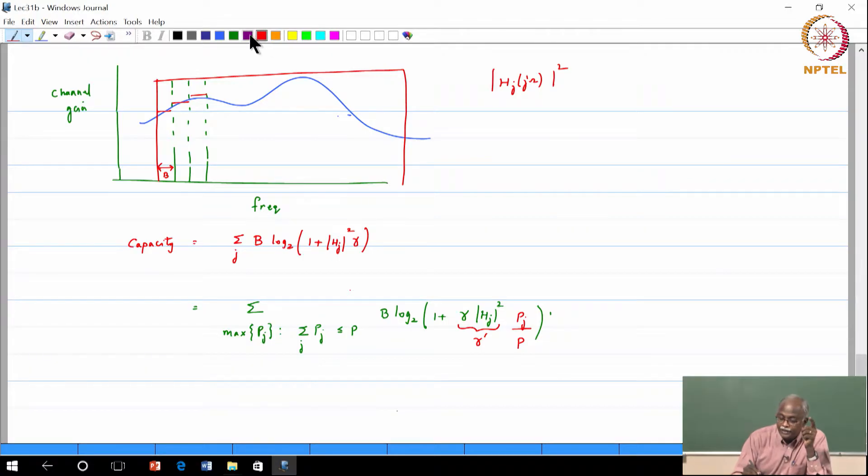And the optimum power allocation - again I am taking it almost without any proof - that P J divided by P will have to be of the form 1 over gamma 0 minus 1 over gamma J with a plus sign, which is water filling.